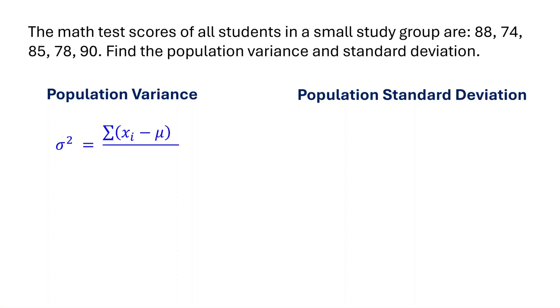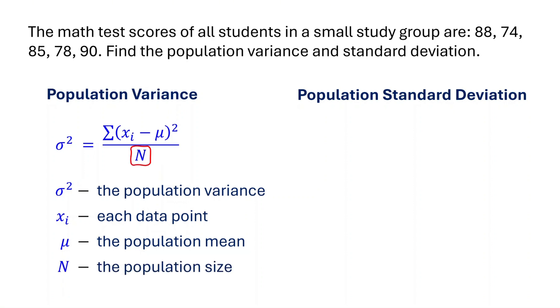The variance of a population is calculated using this formula. Here, sigma squared represents the population variance. Xi represents each data point in the population. Mu represents the population mean, which is the average of the data points in the population. N represents the population size, which is the total number of data points in the population. This symbol means sum up. It tells us to add all the squared differences.